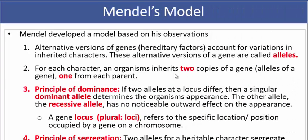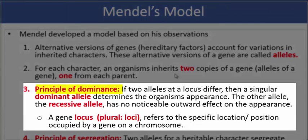Now, the third point is what we call the principle of dominance, which simply states that if two alleles at a locus differ, then a singular dominant allele determines the organism's appearance. The other allele, which we call the recessive allele, has no noticeable outward effect on the appearance.